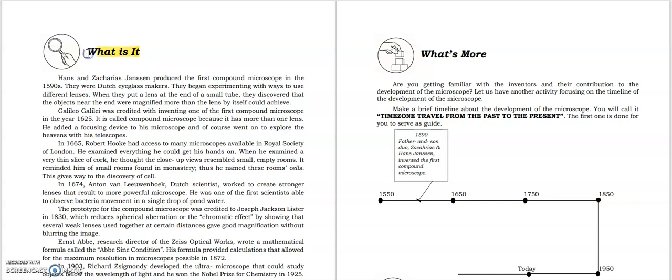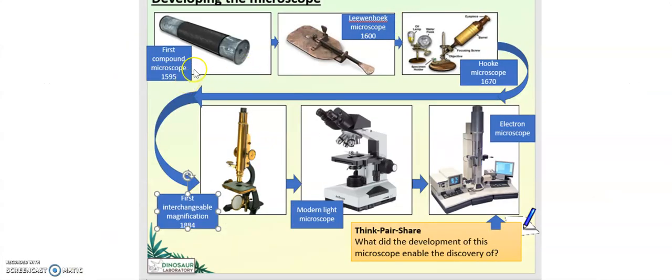We're now at the 'what is it' section. This is all about the history. Here's the picture of the development of the microscope. It started in the 1590s, basically 1595, where the first compound microscope was produced by the Dutch eyeglass makers Hans and Zacharias Jansen.